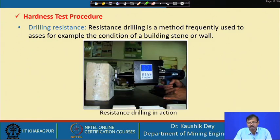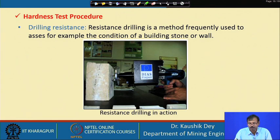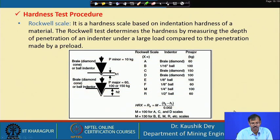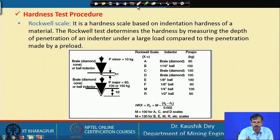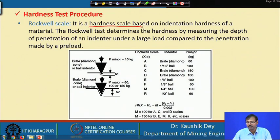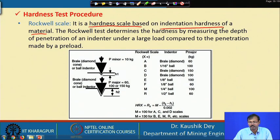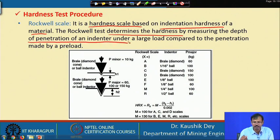Drilling resistance is a method frequently used to assess the condition of a building stone or wall. The drilling resistance is carried out by performing miniature drilling onto the specimen. Hardness is also measured using the Rockwell scale, a hardness scale based on the indentation hardness of a material. In this indentation test, hardness is determined by measuring the depth of penetration of an indenter under a large load compared to the penetration made by a preload.